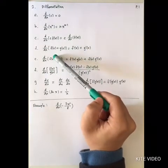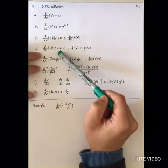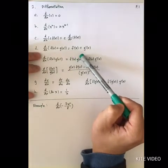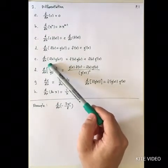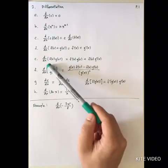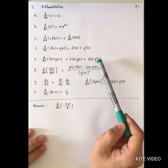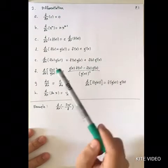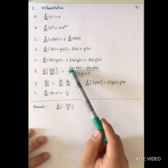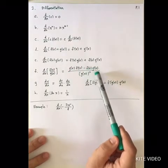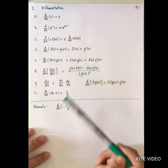The next rule is called the sum rule — if you want to differentiate a function which is a sum of f and g, you can just differentiate each part independently. For the product rule, if you want to differentiate f times g, you first differentiate f and multiply by g, then plus f times the derivative of g. For the quotient rule, you differentiate the numerator times the denominator, minus the numerator times the derivative of the denominator.